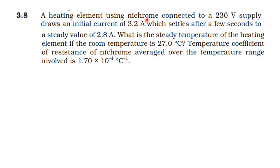A heating element using nichrome connected to a 230 volt supply draws an initial current of 3.2 ampere, which settles after a few seconds to a steady value of 2.8 ampere. What is the steady temperature of the heating element if the room temperature is 27 degrees centigrade? Temperature coefficient of resistance of nichrome averaged over the temperature range involved is 1.7×10^-4 per degree centigrade.